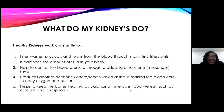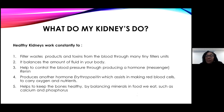What do your kidneys do? They produce urine, where they filter waste products and toxins from the blood through tiny filters. The kidney balances the amount of fluid in your body - if you drink too much, normal kidneys make you go to the bathroom more frequently. It helps control blood pressure by producing a hormone called renin, produces erythropoietin to assist in making red blood cells, and helps keep bones healthy by balancing minerals like calcium and phosphorus.